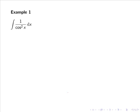So let's consider the integral of 1 over cos²x dx. We just established that sec x = 1 over cos x, hence sec²x must equal 1 over cos²x.